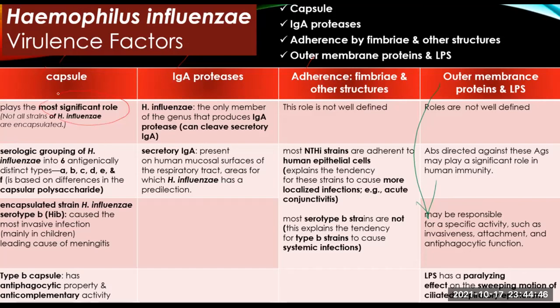Before widespread use of vaccine, most invasive infections were caused by the encapsulated strain of H. influenzae serotype B (Hib) and occurred primarily in young children. However, serotype B strains are rarely seen now in children in countries using the vaccine, though occasional serious invasive infections are still seen in adults, especially those over 65 years. In unvaccinated children, type B is a leading cause of meningitis.